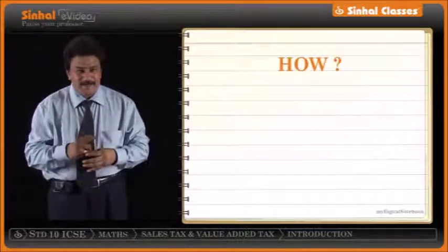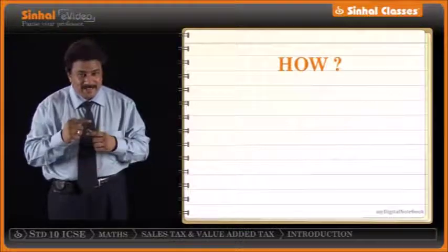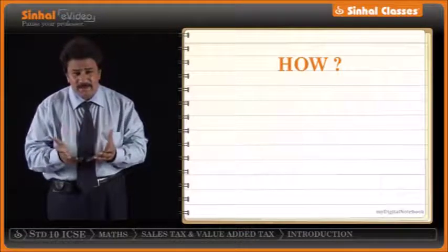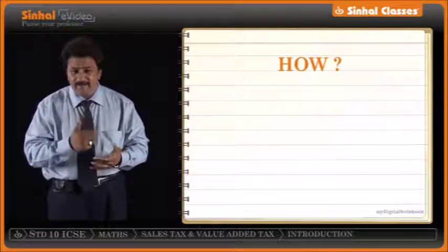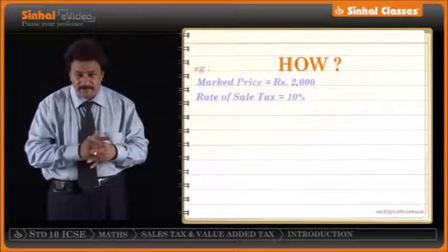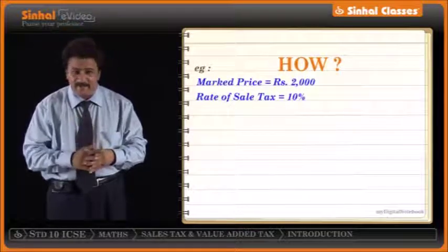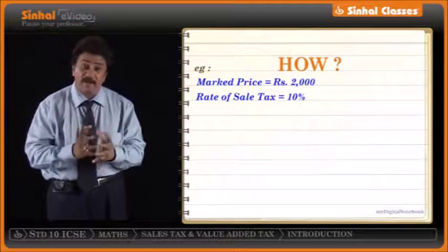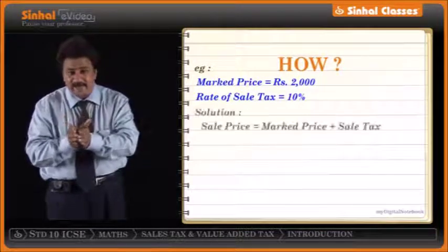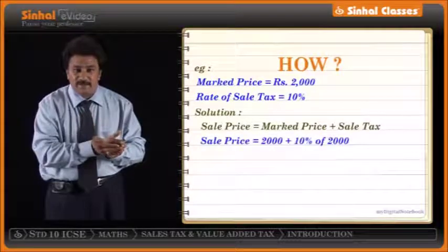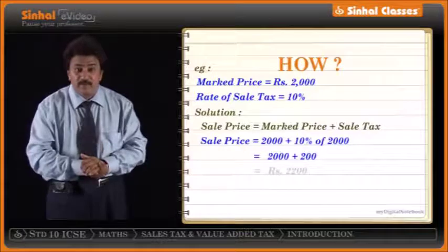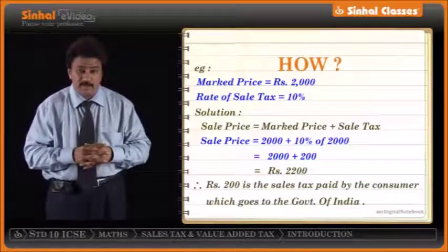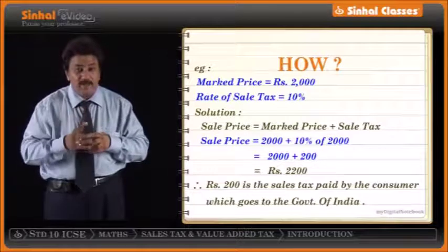Now how does it work? Sale tax is charged on the mark price — also called list price, catalog price, printed price, or book price. For example: mark price of a camera is Rs. 2000 and rate of sale tax is 10%. The consumer pays mark price plus sale tax, that is 2000 plus 10% of 2000, which is 2000 plus 200 = Rs. 2200. So Rs. 2200 is the price paid by the consumer, which includes the sale tax that goes to the government of India.